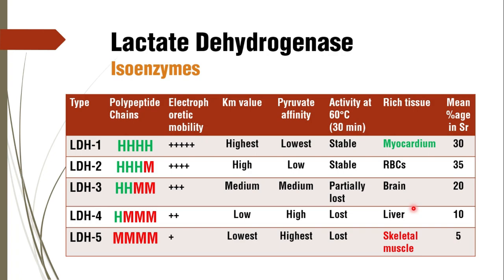The KM value is highest for LDH1 and lowest for LDH5, while pyruvate affinity is lowest for LDH1 and highest for LDH5. LDH1 is the most stable at 60°C and LDH5 is the most labile. The mean serum percentage for LDH1 through LDH5 is approximately 30, 35, 20, 10, and 5 respectively. Since LDH1 and LDH2 are nearly equal, elevated total LDH is most likely due to RBC pathology.